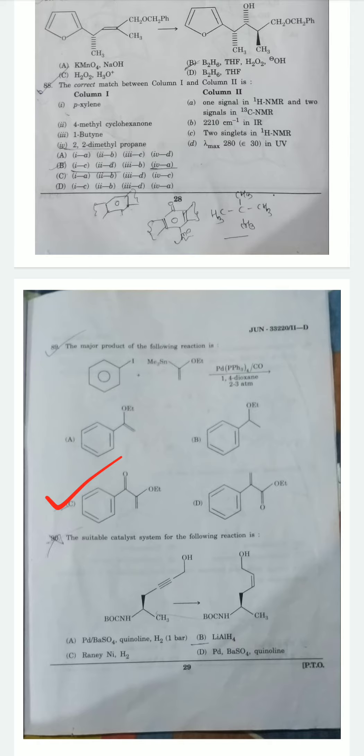Question 13: Suitable catalyst system for the following reaction. Looking at the reactant and product, the product is a cis-alkyne. Pd in presence of BaSO4, quinoline, and H2 at one bar pressure - this is Lindlar catalyst. Lindlar catalyst gives cis-alkyne. LiAlH4 gives trans-alkyne. Therefore option A is correct.